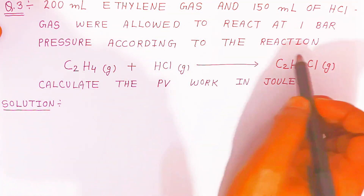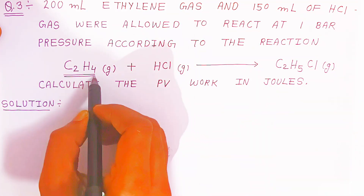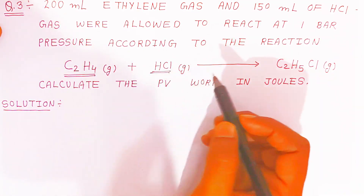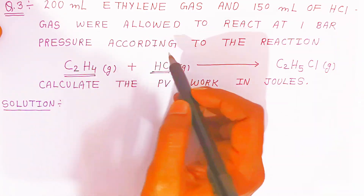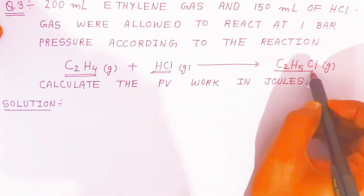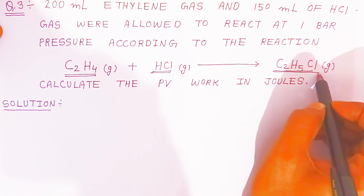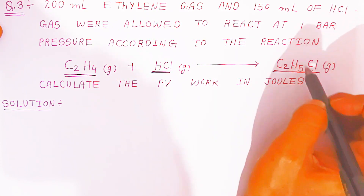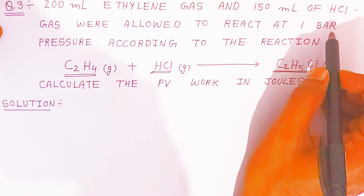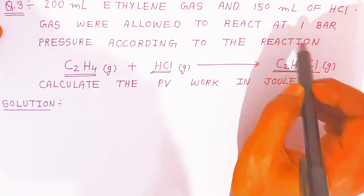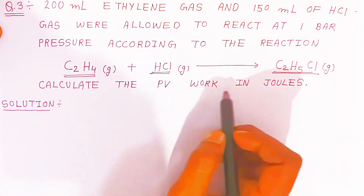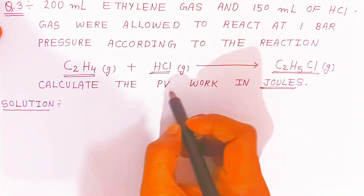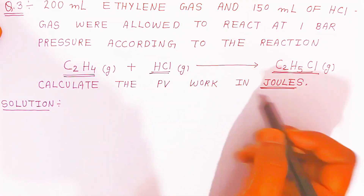According to the reaction, ethylene gas and SCl gas both are reacting and they are forming ethyl chloride gas. At this point, the pressure is given as one bar. You have to calculate the pressure-volume work in Joules.